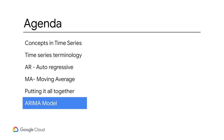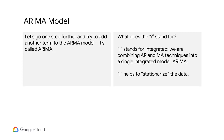Now, there is one more trick we can add to the ARMA model to make it more accurate in its predictions. That's called an ARIMA model, with an extra I in the middle. The I stands for integrated — we are combining AR and MA techniques into a single integrated model, hence it is called ARIMA. The I helps with the step where we had to stationarize the data before modeling.